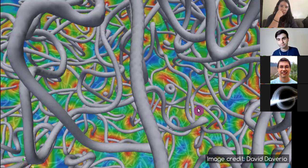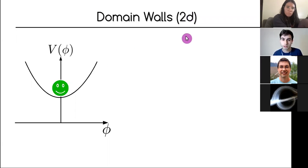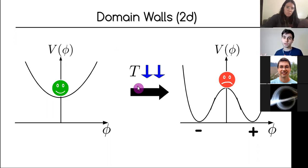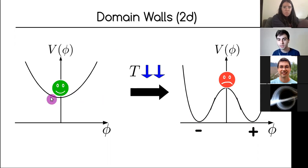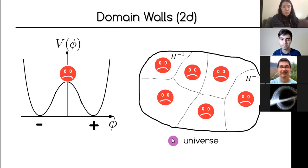To understand cosmic strings I think it's easier to start with domain walls. Domain walls are two-dimensional topological defects. Imagine that in the very early universe you have some scalar potential with one minimum, so all the universe is happy to be in the lowest energetic configuration. But as the universe expands, the temperature goes down and temperature corrections may develop new minima that break the original symmetry.